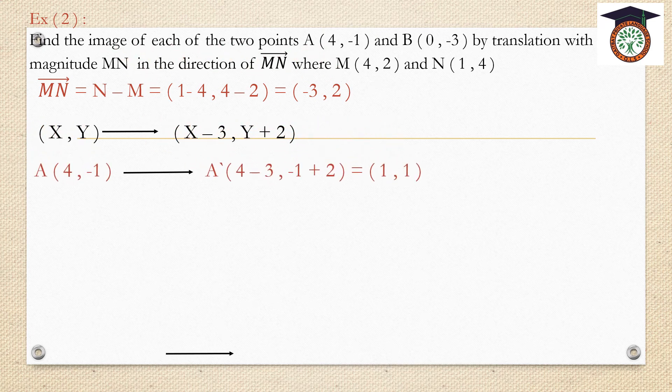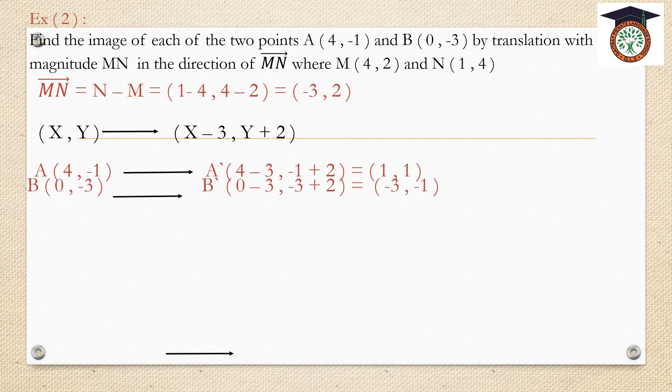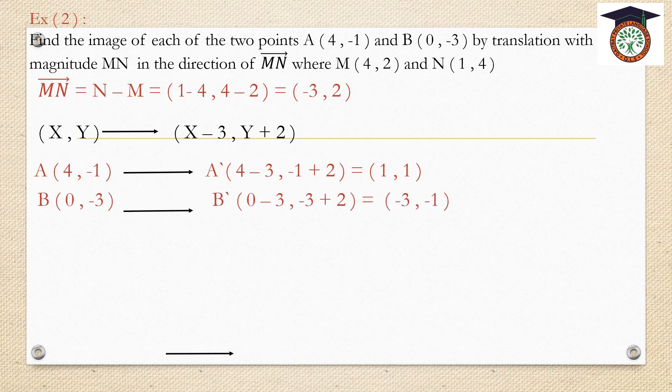For point A(4, -1): A dash is 4 minus 3 and -1 plus 2, which equals (1, 1). For point B(0, -3): B dash is 0 minus 3 and -3 plus 2, which is (-3, -1).